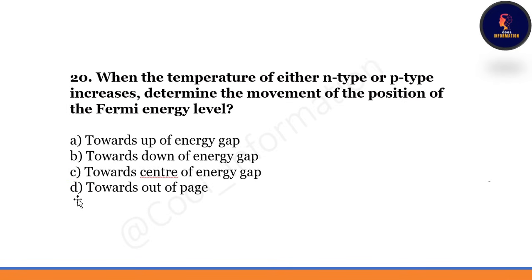When the temperature of either N-type or P-type semiconductor increases, determine the movement of the Fermi energy level. Option A: towards the top of the energy gap. Option B: towards the bottom. Option C: towards the center of the energy gap. Option D: towards out of the page. Correct option is C — towards the center of the energy gap.